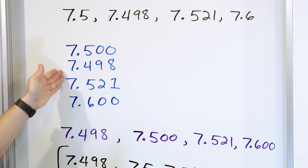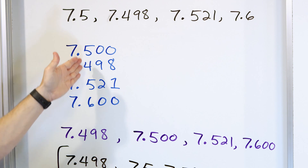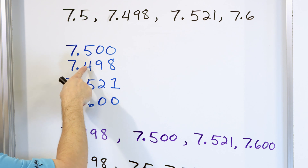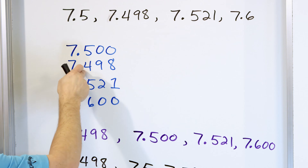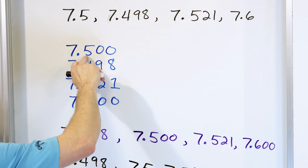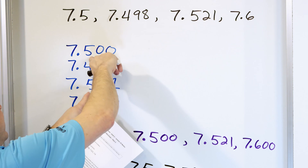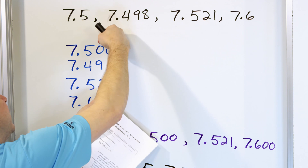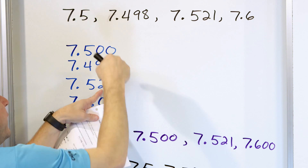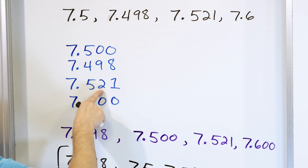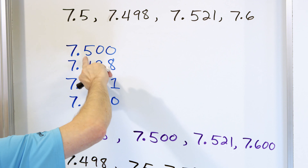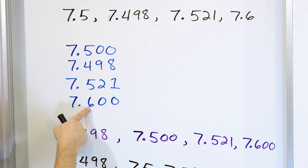Let me go through it one more time. We look at the whole numbers — they're all tied, so we look at a tiebreaker. The smallest in the tenths is 4, so that has to be the smallest number. Then we have a tie between two numbers both showing 5, so we look for another tiebreaker. The one with zero comes next, then the one with two. Going back to the tenths: we had 4, two at 5, and the largest was a 6 — so that's the largest number.